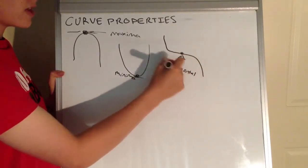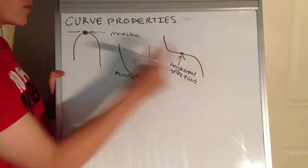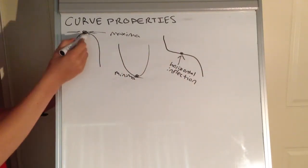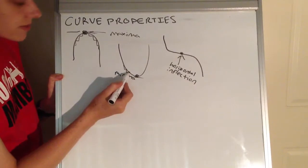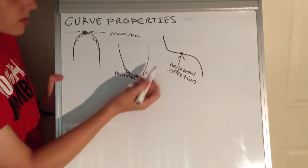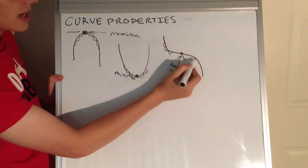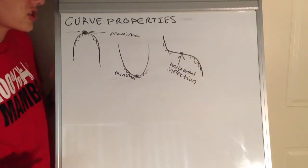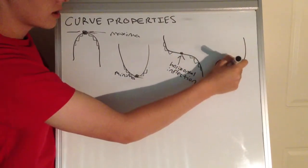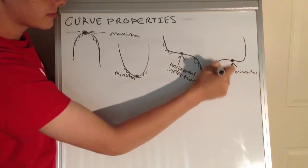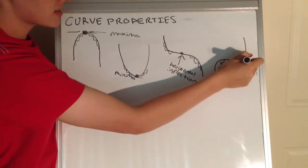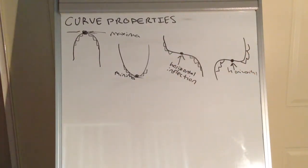And we can have a horizontal inflection, and this is an interesting one compared to the others. With our maxima, we have a positive slope here, but we're changing to a negative slope on the other side. With a minima, we have a negative slope and we're changing into a positive slope. With a horizontal inflection, we have a negative slope, and we still have a negative slope — it doesn't change direction. And we can have it the other way as well — a positive horizontal inflection — because it's increasing on both sides in terms of the slope.